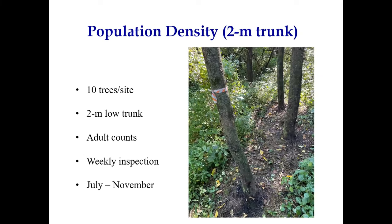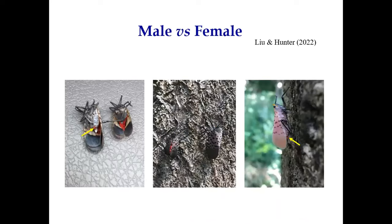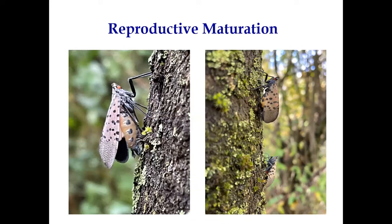Based on that, we switched to two-meter trunk sampling for the next couple of years. We also sexed adults based on the red forewing — as indicated by the yellow arrow — and checked reproductive maturation for both males and females. On the left is a male with expanded abdomen showing yellow areas on the right. Two females are shown — the lower one is not matured, the upper one is matured, visible based on yellow areas on the abdomen.